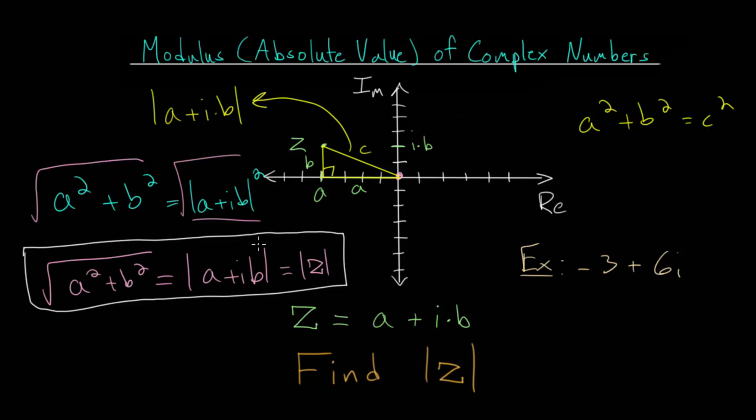Just matching this up to our formula, comparing it to our general complex number, we can see that a is negative three, and b is six. And we can call this z1, the complex number z1.